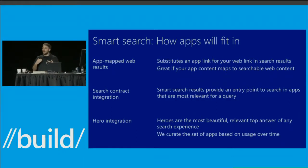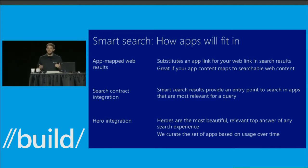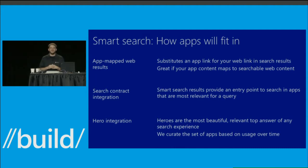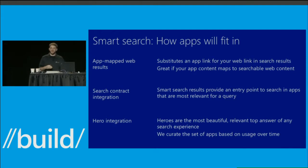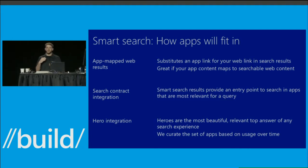When people at this conference ask how apps plug into smart search, here's a preview of what to expect. First is app-mapped web results — like when I clicked the Wikipedia link, which was returned as a web link but took the user to the app instead of the website. If you have a popular website that's crawlable via search engines right now, it's going to be a candidate for this.